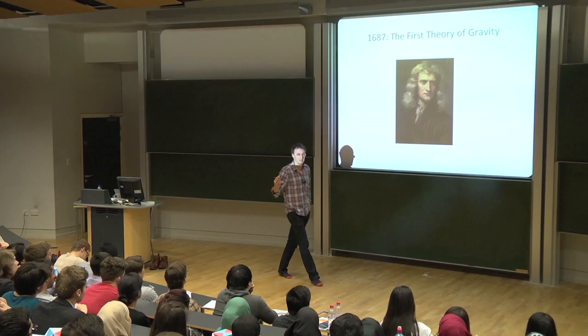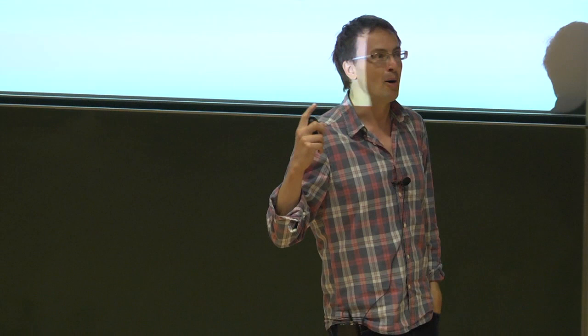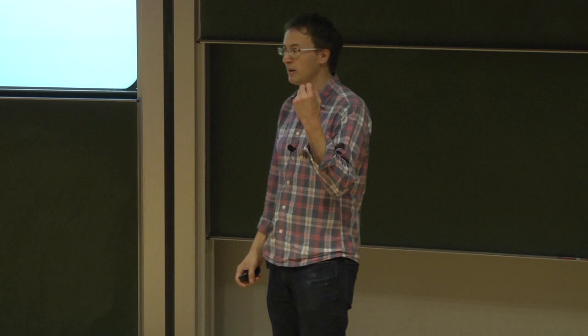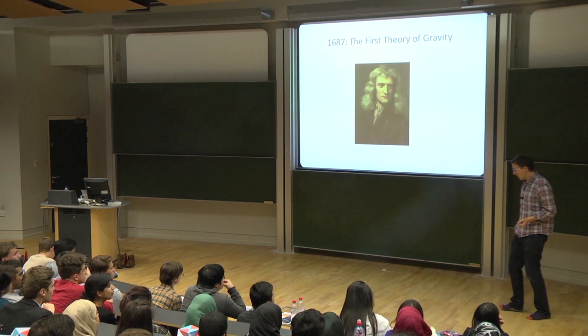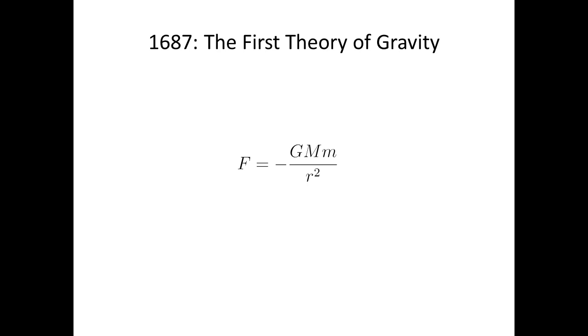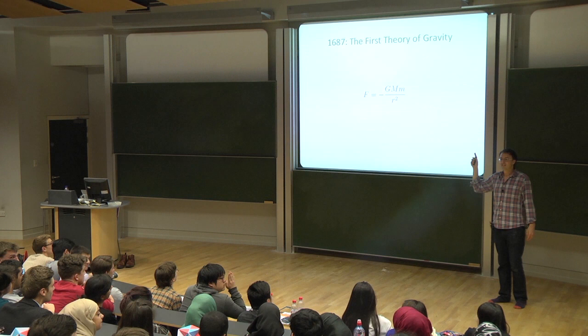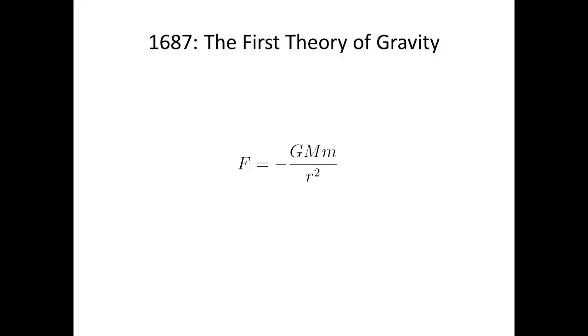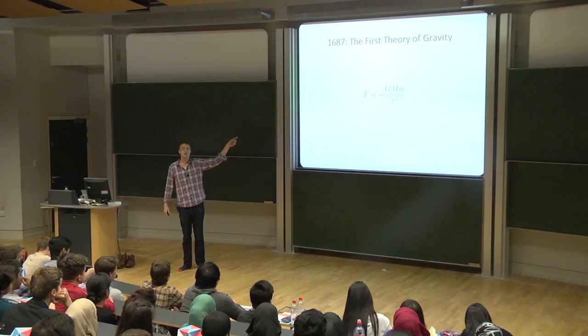In 1687, Isaac Newton wrote his masterpiece — a book called The Principia. He wrote it about 500 metres in that direction in Trinity College. It's basically the birth of modern science, certainly the birth of theoretical physics. It explains laws of motion and it also contains a law of gravity. This is the law of gravity that Newton gave us. F on the left-hand side is the force — it goes into F equals ma. What's on the right is the force of gravity.